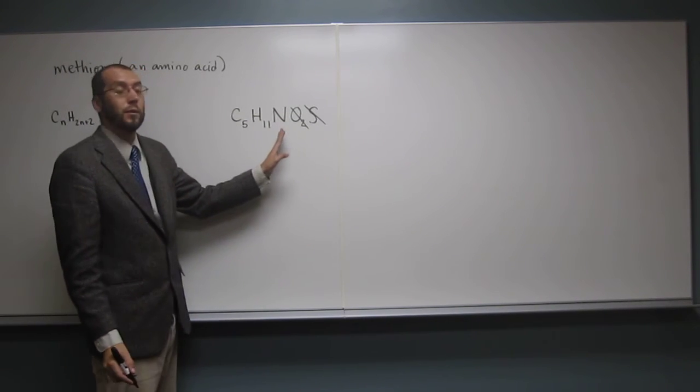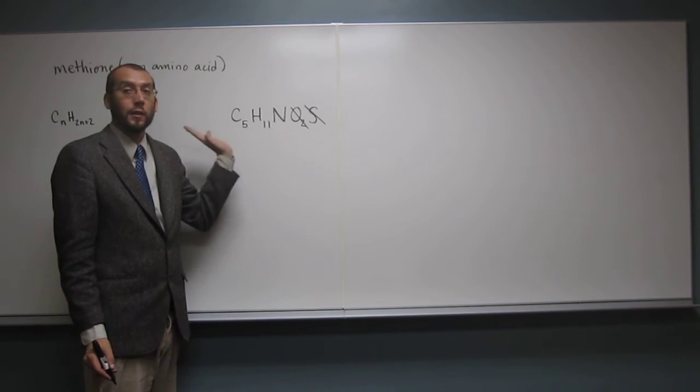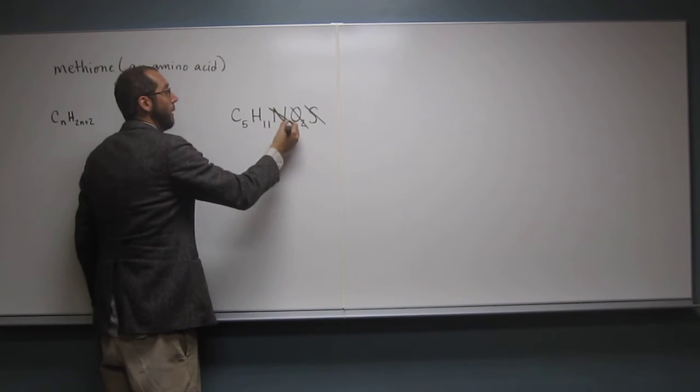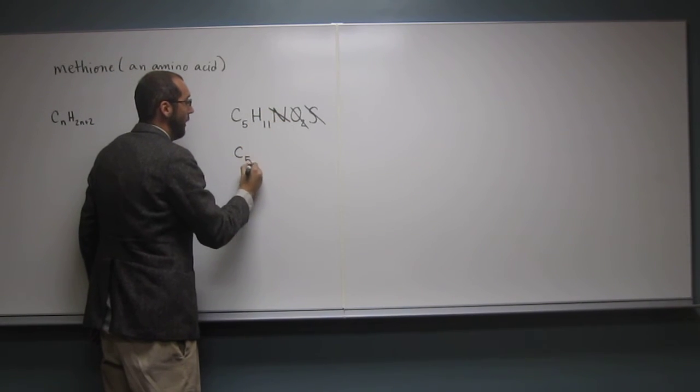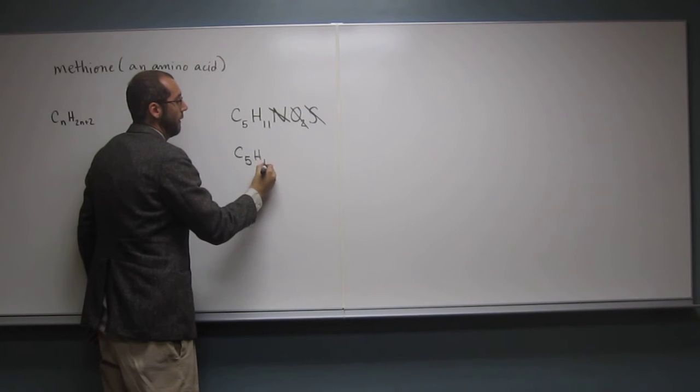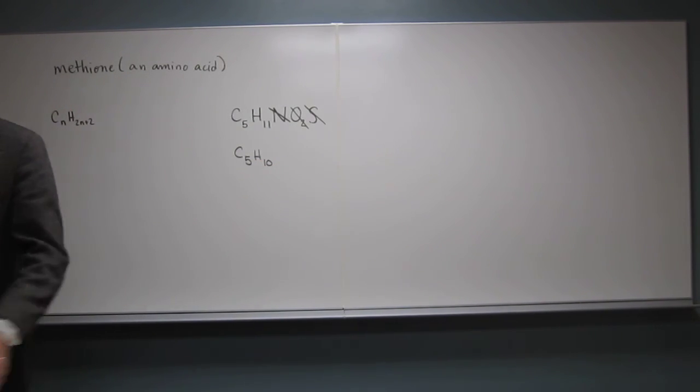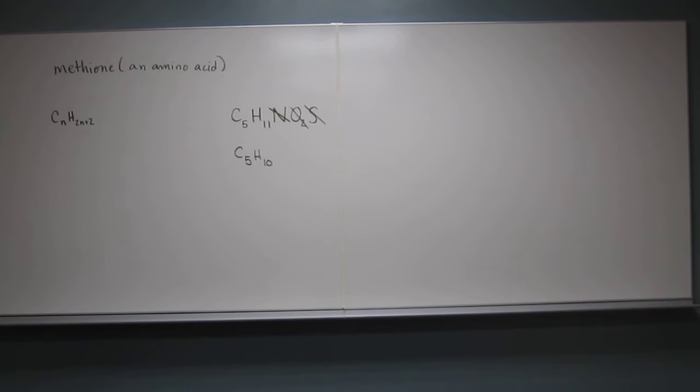So what happens when we have N's in the molecule? You take one hydrogen away. Take one hydrogen away. So what are we going to do? We're going to have C5H what? 10. 10, OK? So that's the formula that we're looking at now, OK?